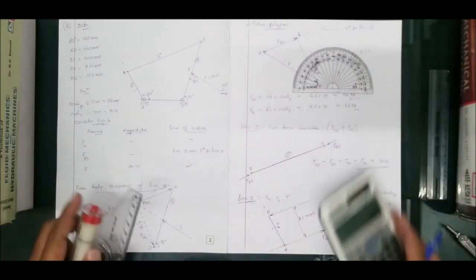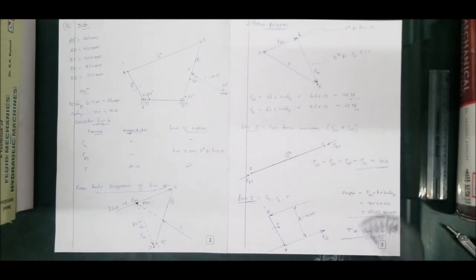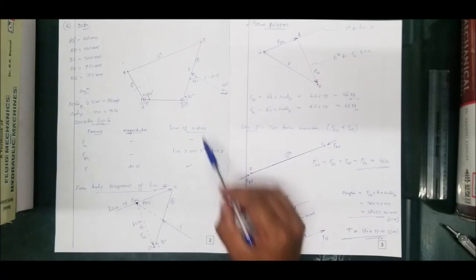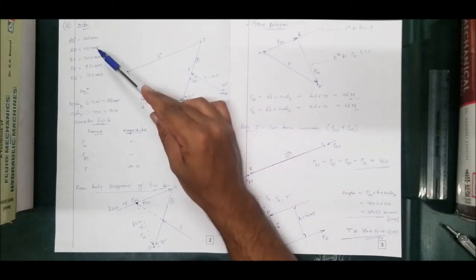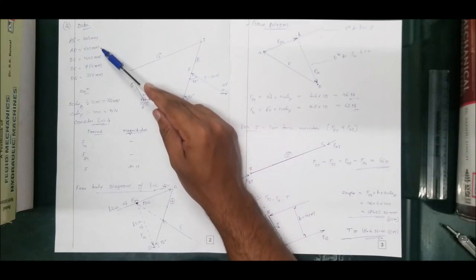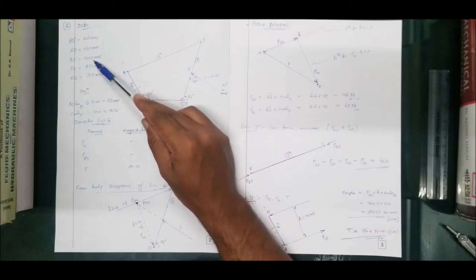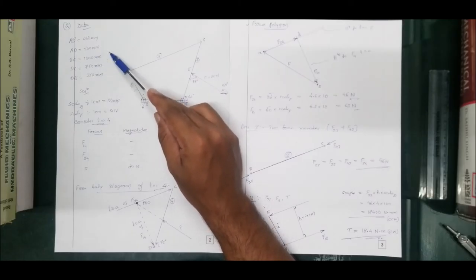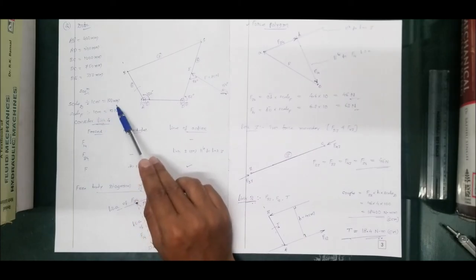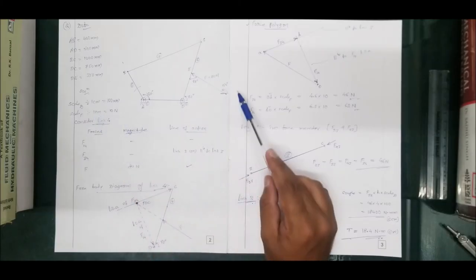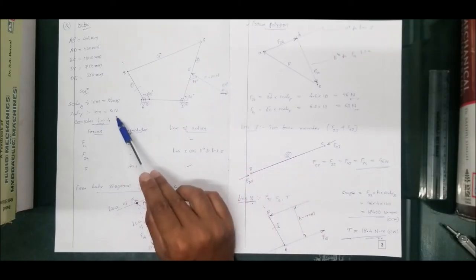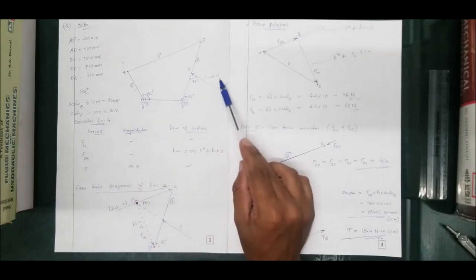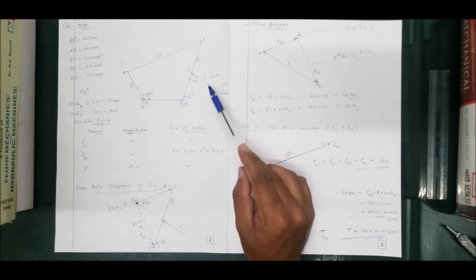This is the complete solution for problem number 2. In summary: Step 1 — reconstruct the problem to scale (1 cm = 100 mm for dimensions, 1 cm = 10 N for forces). The maximum dimension is 1000 mm = 10 cm, and 80 Newtons = 8 cm — both manageable.